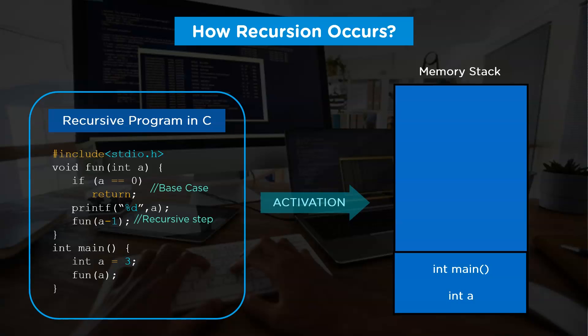This activation record will consist of local variables of function, parameters and the record of return address to the caller. But here, for the sake of simplicity, we are just maintaining the local variables inside the activation record. After this step, as you can see, the main function is activating method fun with argument three.